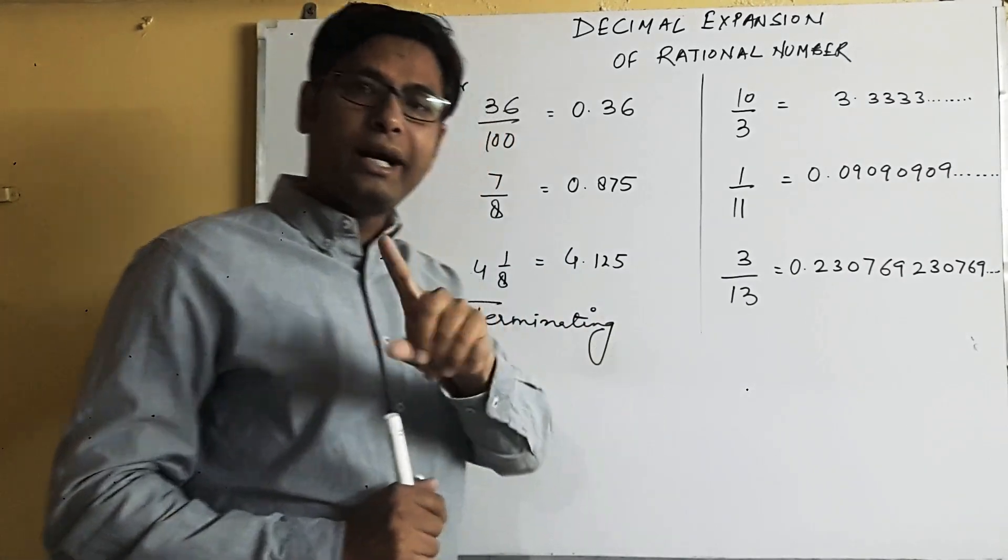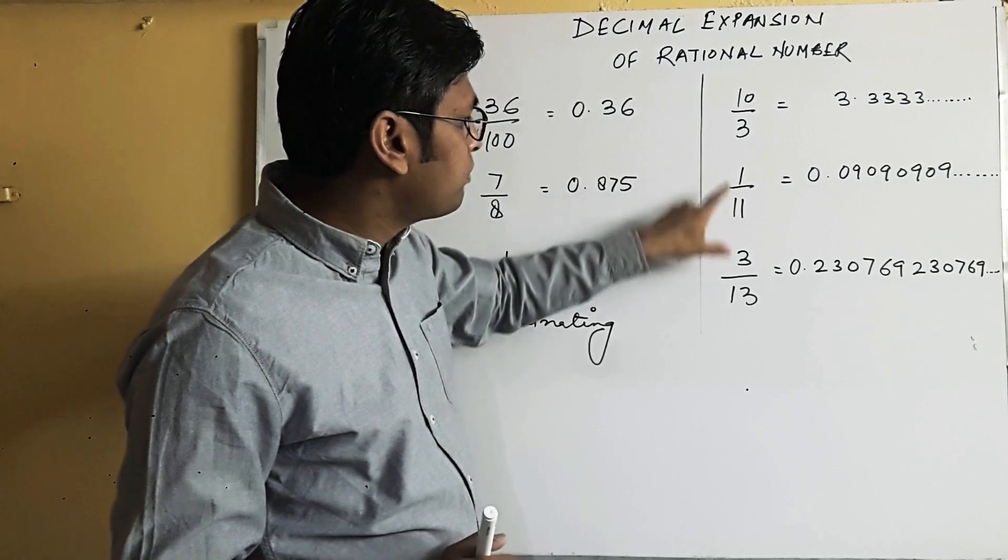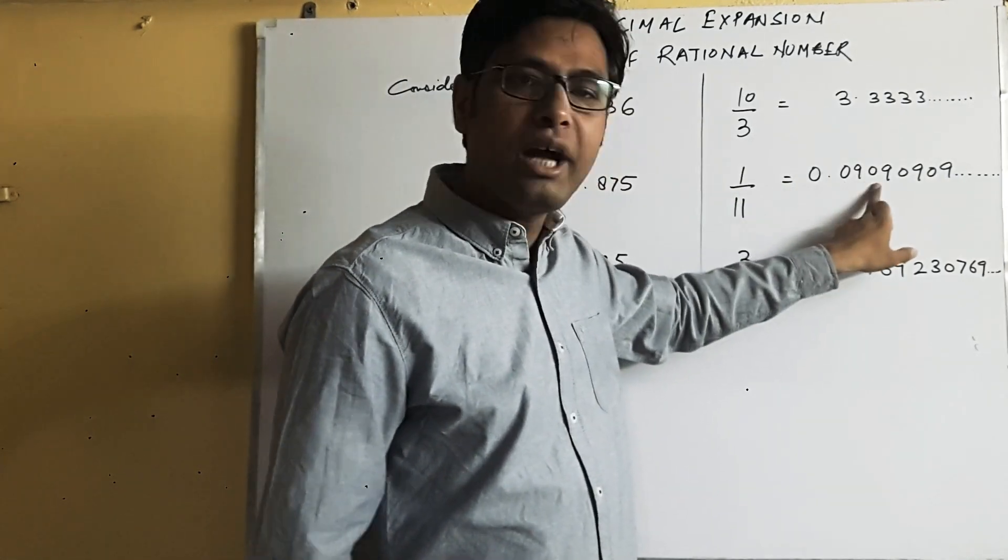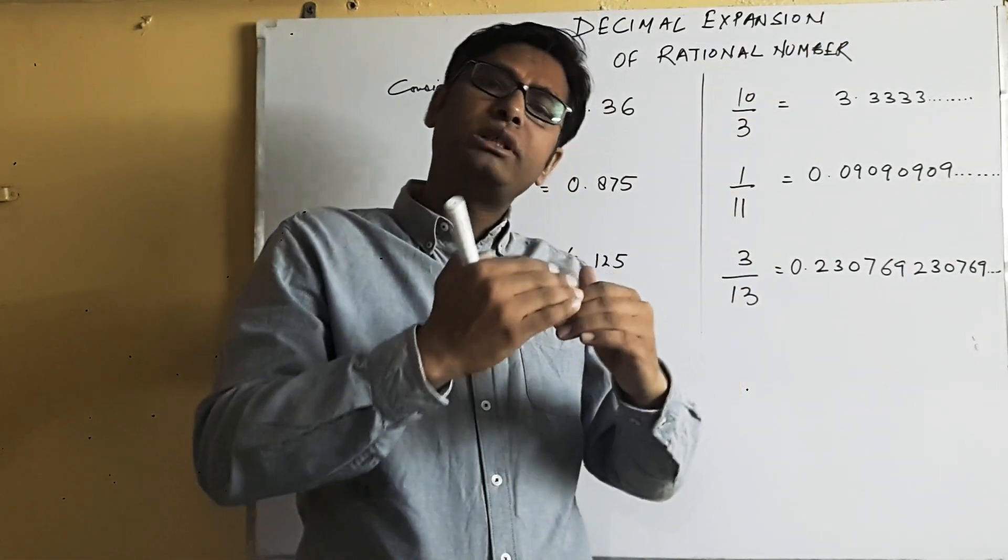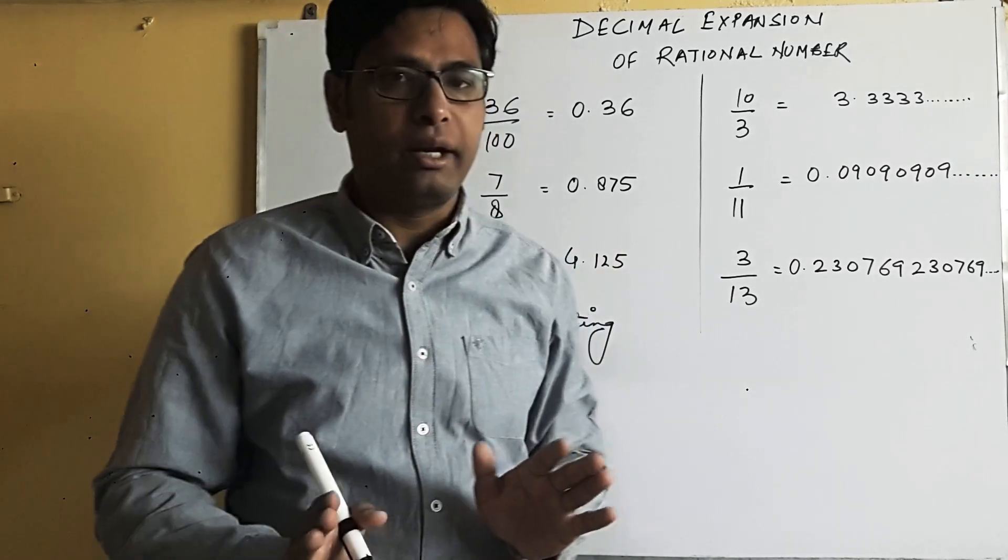Similarly, take another example, 1 upon 11. When you divide 1 by 11, it will be 0.09090909 and so on. It will be continuously 090909 will come, always. It will never come to an end.